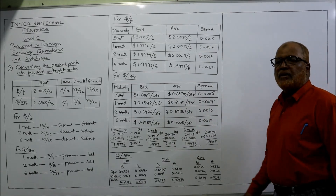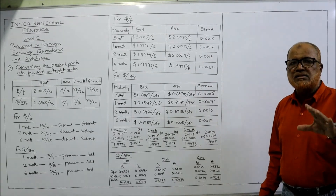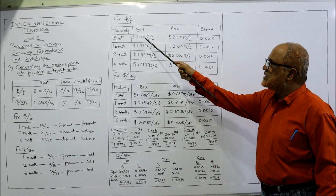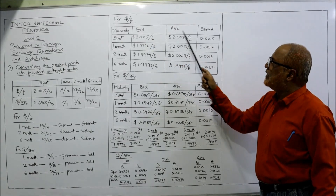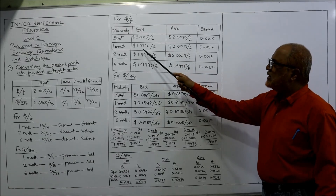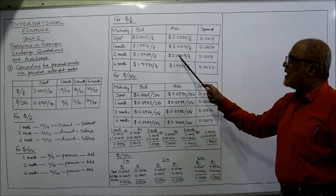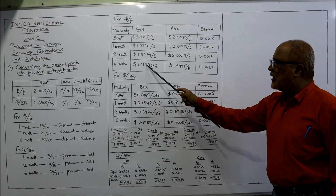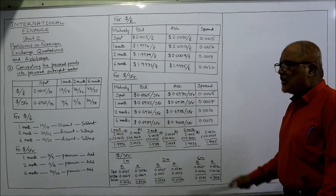Now the same procedure for dollar per SFR. The spread formula is: ask minus bid. For the spot rate: 2.0030 minus 2.0015 gives a spread of 0.0015.